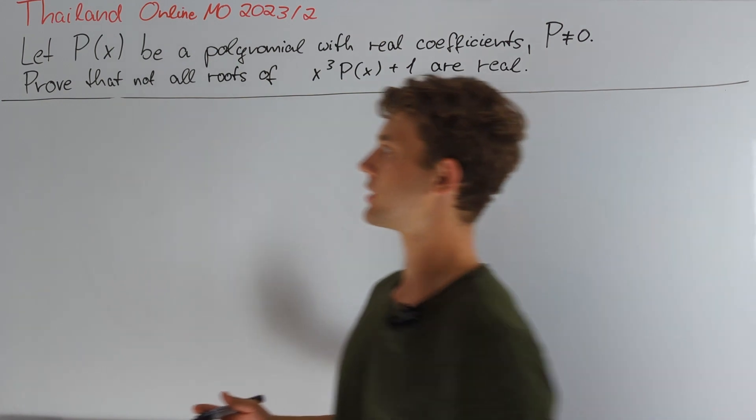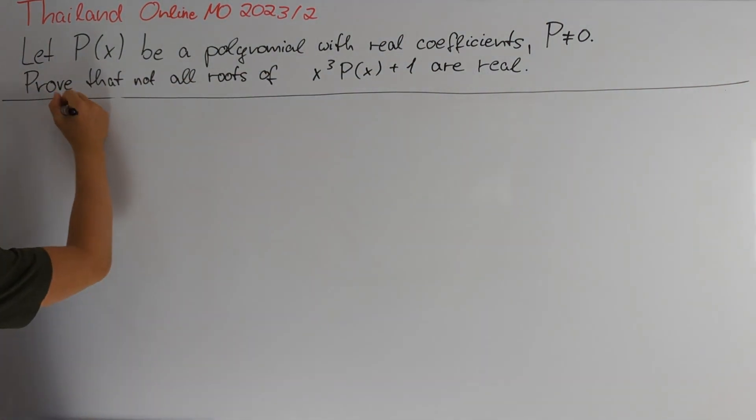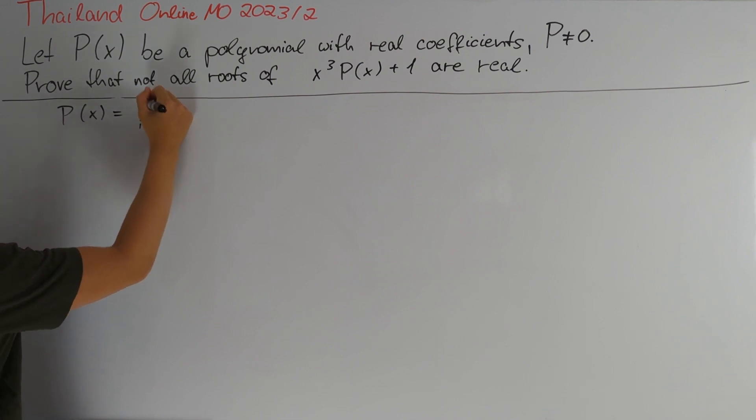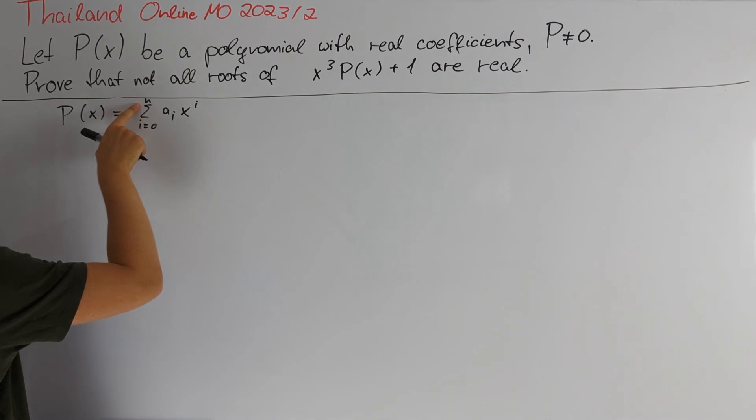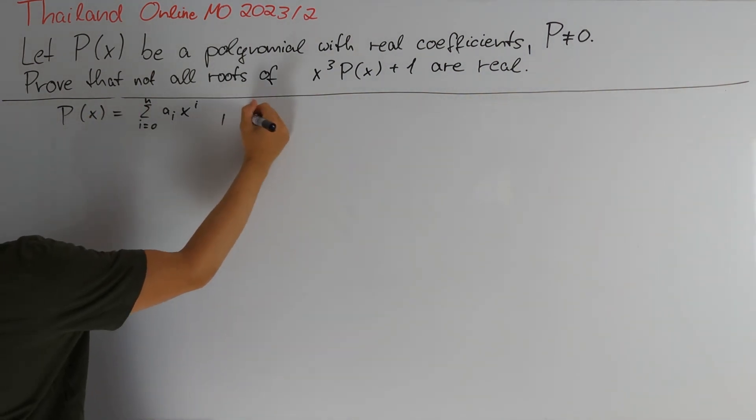Because P(x) is a polynomial with real coefficients, we can write it as the sum of i going from 0 to n of aᵢ times x to the power of i, where aᵢ are some real coefficients. And because P is not a zero polynomial, we can choose n as the degree of P(x), so aₙ is not equal to 0.